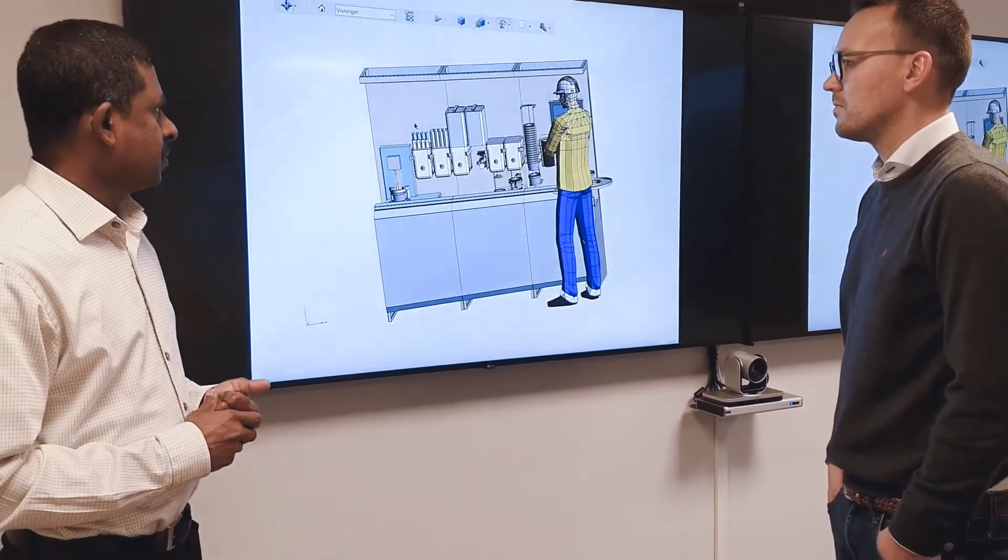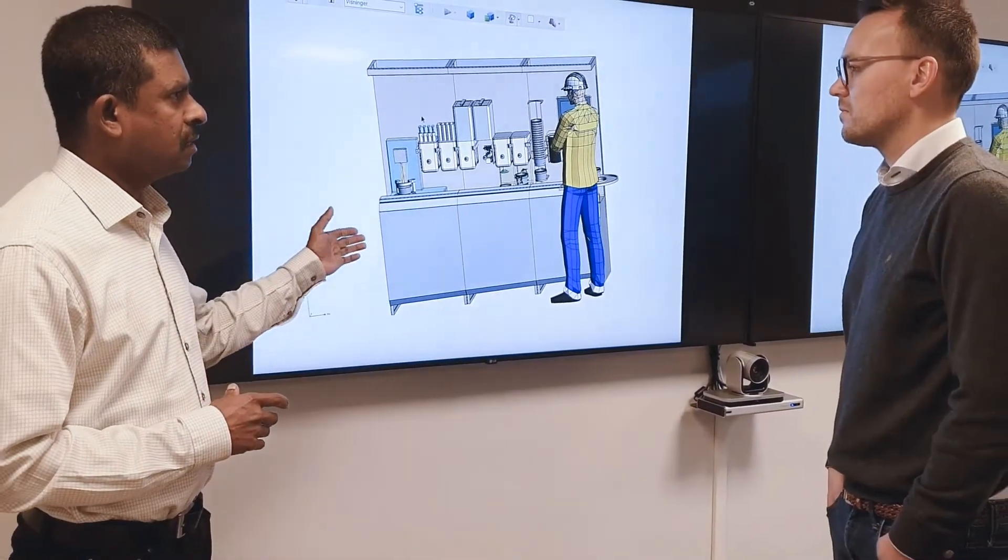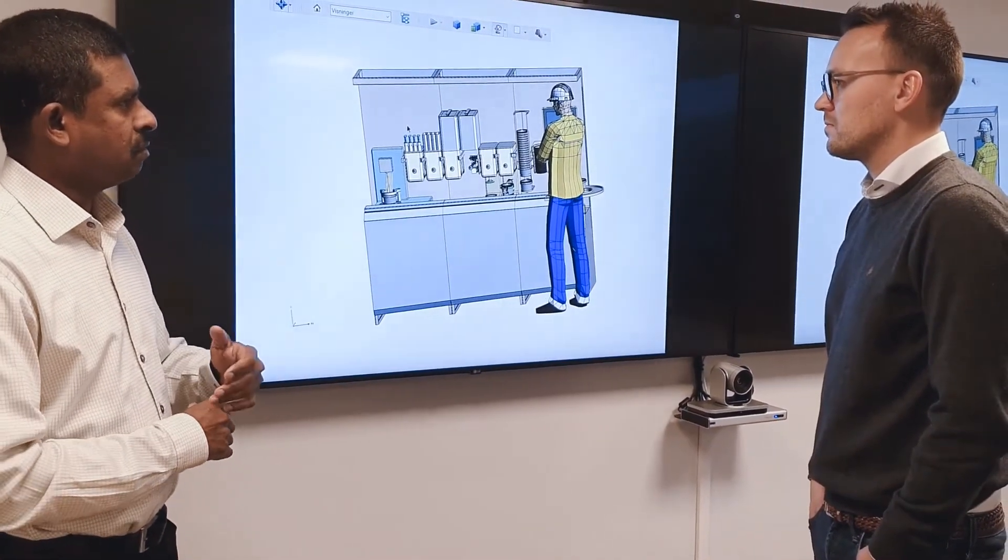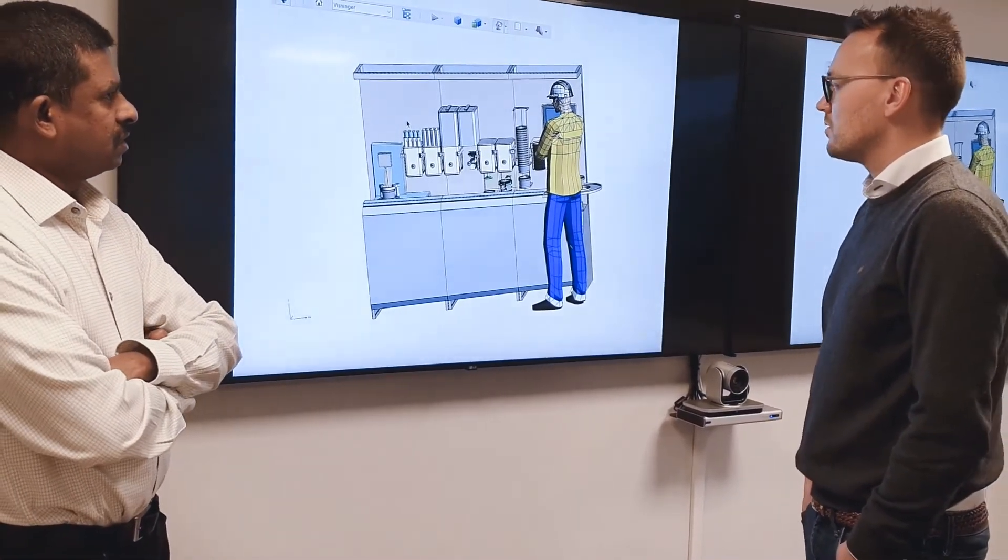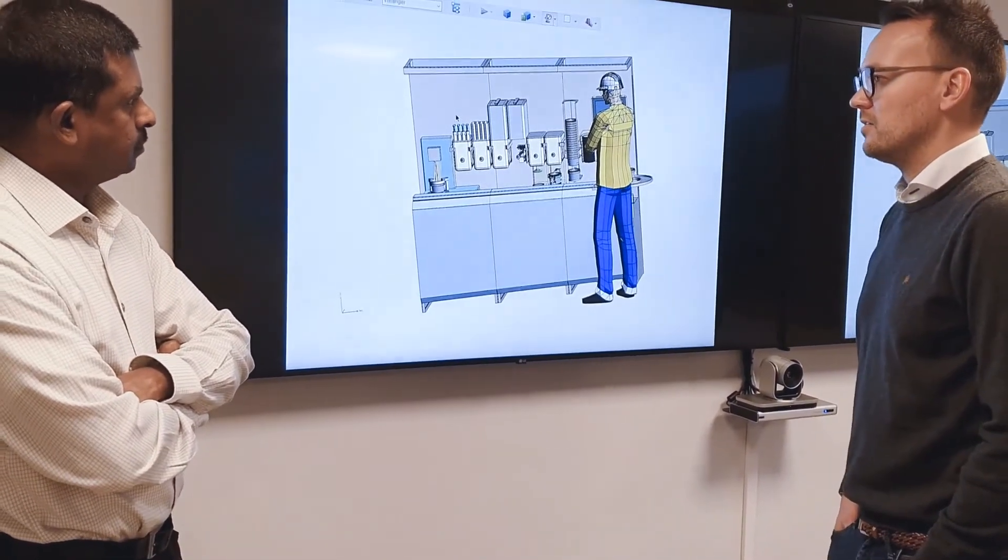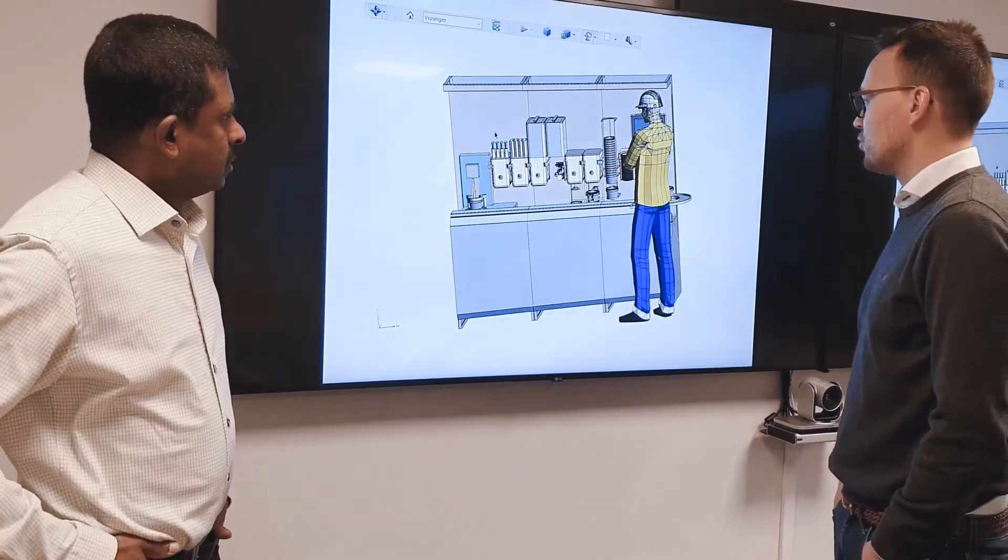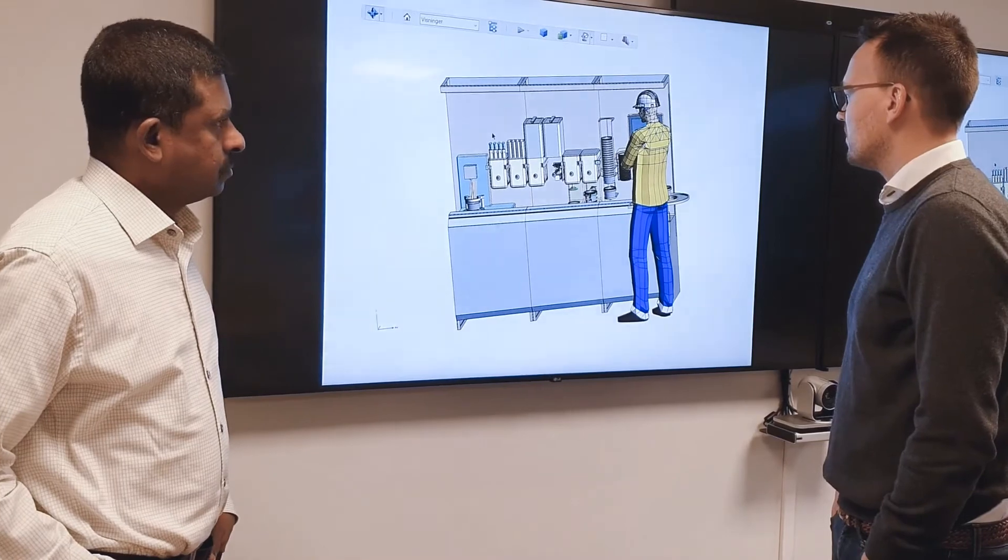We also take care of automation here, all these things, robotic process automation. We send all the production data also to the digital twin to be able to analyze that, to be able to automate production for example.